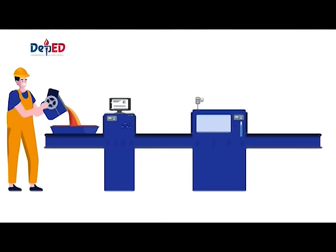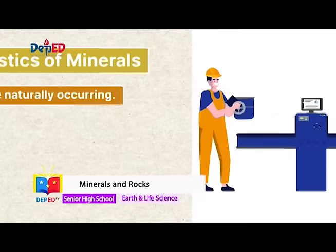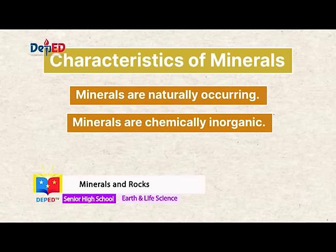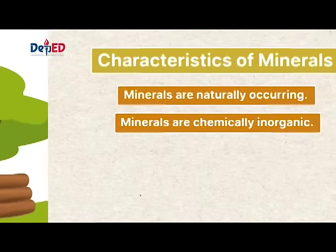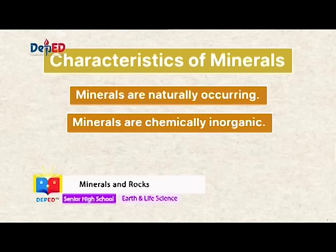The steel that we mostly use for making buildings and tools is not a mineral because it is an alloy produced by people. Second, minerals are chemically inorganic. This means that the material's chemical composition is without carbon. It must be a product of earth's physical processes. Pearls and woods are from the clams and trees, and thus these are not minerals.